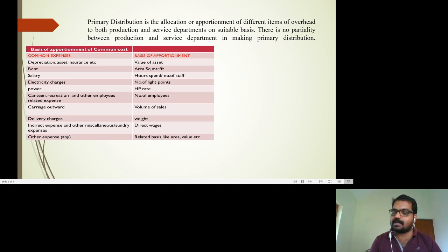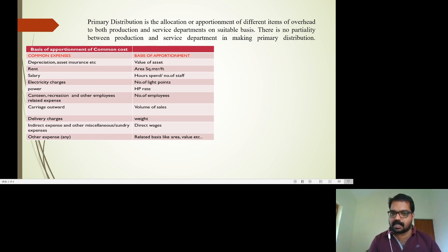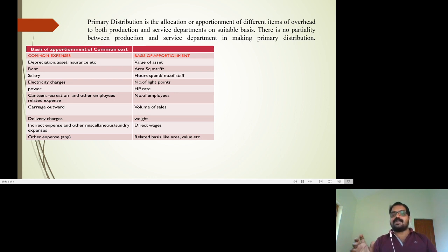What does primary distribution mean? Primary distribution is the allocation or apportionment of different items of overhead to both production and service departments on a suitable basis. There is no partiality between production and service departments in making primary distribution — in all departments we have to distribute on a certain equitable basis.